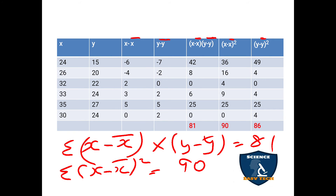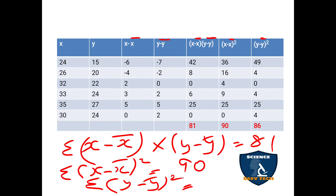Next, find y − ȳ squared. (−7)² = 49; (−2)² = 4; 0² = 0; 2² = 4; 5² = 25; 2² = 4. Adding everything: Σ(y − ȳ)² = 86.